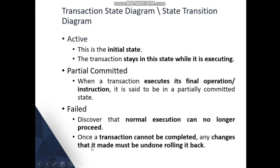Failed: This state is discovered when normal execution can no longer proceed. Once a transaction cannot be completed, any changes it made must be undone by rolling it back. This means that during execution, if there is a system issue, mathematical problem, or any kind of interrupt, the transaction fails and is said to be in the failed state.